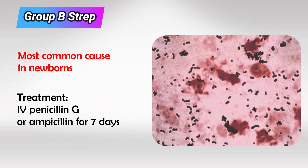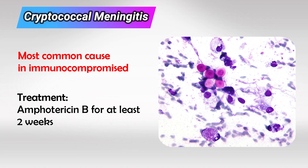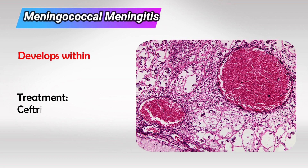The most common cause of meningitis in HIV and immunocompromised patients is cryptococcal meningitis, and the treatment is antifungal therapy like amphotericin B for at least two weeks.